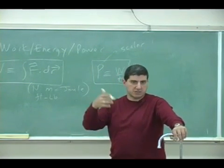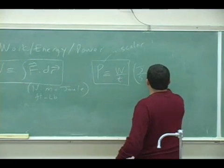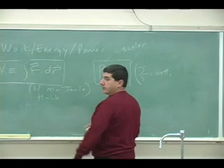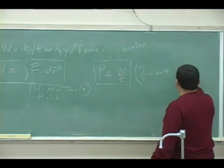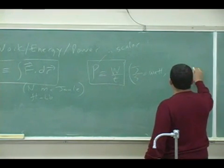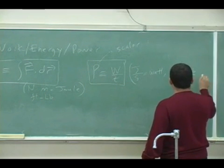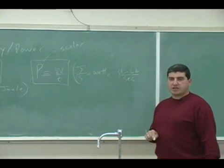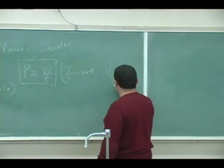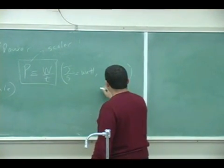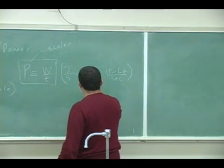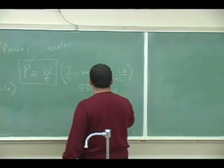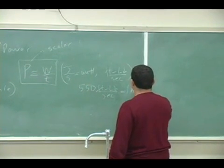We're giving these certain abbreviations named after the scientists who did a lot of work in that field. Joule is a scientist. Watt is a scientist. And then for the foot pound, it would be foot pound per second in the British unit system. And for that one, the abbreviation we use is horsepower. 550 foot pound per second is one horsepower.